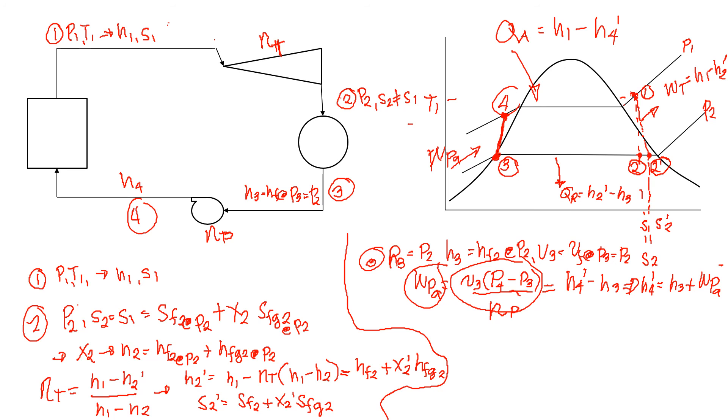Therefore, your work net is equals to work turbine actual minus work turbine actual minus work pump actual. And finally, your thermal efficiency is equals to work net actual over QA. Let's designate this as actual. And thus, you can find your thermal efficiency in the actual Rankine cycle. Hope you understand and enjoy the learning process. Thank you.